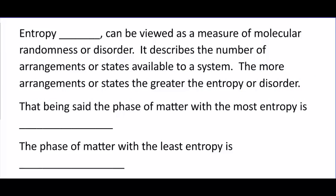Entropy — the change in entropy is delta S — but we often talk about how one thing's entropy changes. It's really a measure of molecular randomness or disorder. It describes the number of arrangements or states available to a system. The more arrangements or states, the greater the entropy.